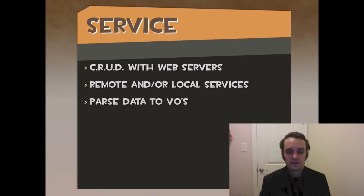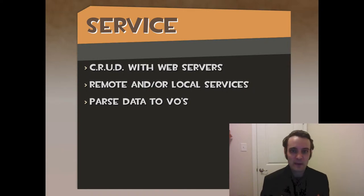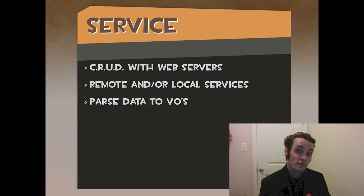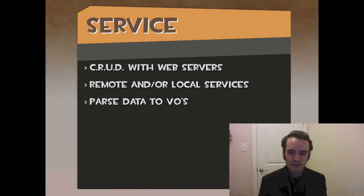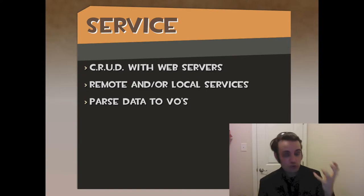Parsing data to VOs. Most services will get data from a back end in some type of domain object that you know about. That domain object or value object is going to be parsed in that service. So that service says get a user — it'll give you back a user. A user could be obviously JSON, but the language or the nomenclature that we speak about is in domain objects or value objects. A user object.